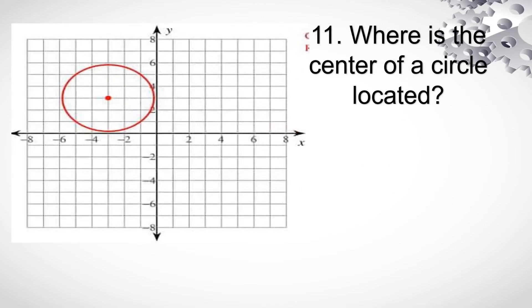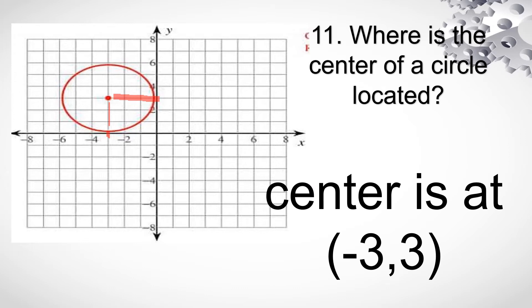Number 11. Where is the center of the circle located? So ang gagawin nyo lang is ipaplot nyo, hanapin nyo yung location. First, let's look for x — yung x nyo ay nandito sa negative axis. Dito ay negative 3. And then nandito naman sa positive 3. That's the center of the circle. So center is at (-3, 3).